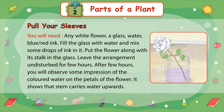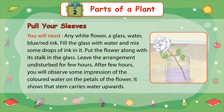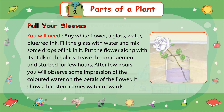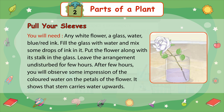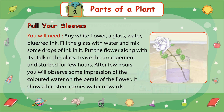Experiment: you will need any white flower, a glass, water, and blue or red ink. Fill the glass with water and mix some drops of ink in it. Put the flower along with its stalk in the glass. Leave the arrangement undisturbed for a few hours. After a few hours, you will observe some impressions of the colored water on the petals of the flower. It shows that stems carry water upwards.